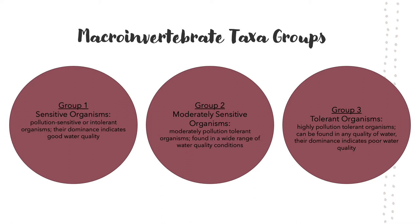We can break macroinvertebrates up into three taxa groups. Group 1 consists of sensitive organisms, also called pollution-sensitive or intolerant organisms, whose dominance typically indicates good water quality. Group 2 contains moderately sensitive organisms that are found in a wide range of water quality conditions. Group 3 consists of tolerant, highly pollution-tolerant organisms that can be found in any quality of water, but whose dominance typically indicates poor water quality.